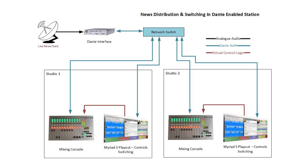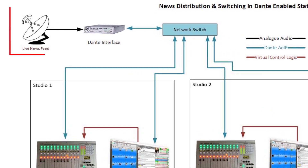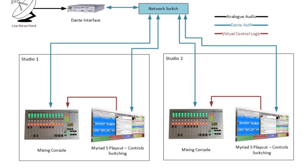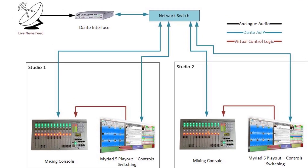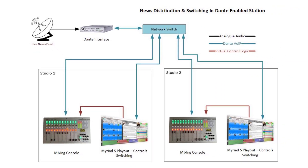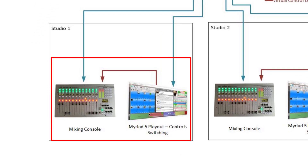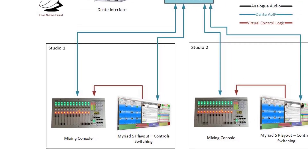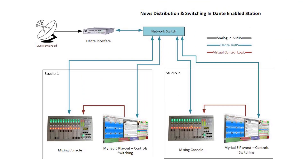Now let's consider how we may achieve the same results in a Dante-enabled station. The analog news feed comes into a Dante interface, which is connected to a network switch. The playout system in each studio is also connected to the network switch, as is the mixing console. The only piece of analog audio wiring required is a feed from the news system into the Dante interface. We've also eliminated the need for the audio switch, as Myriad Playout is able to use virtual I/O to trigger salvos on the mixing desk that can add the news feed directly to the PGM bus. Almost all the cabling here is standard network infrastructure, making installation much quicker and simpler, and also making it much easier for the end customer to maintain their system.